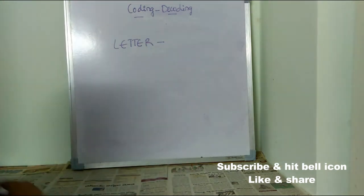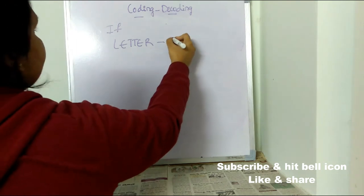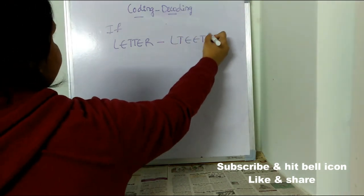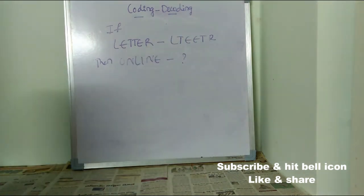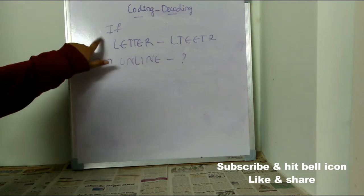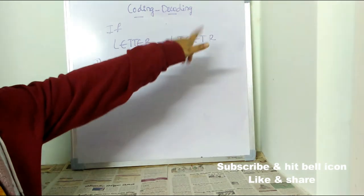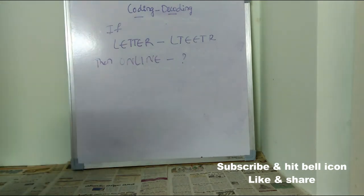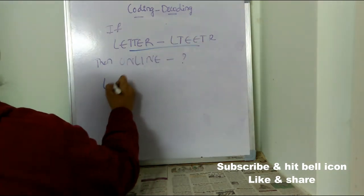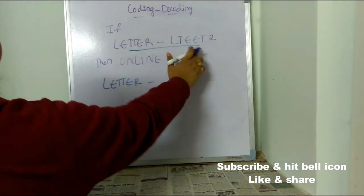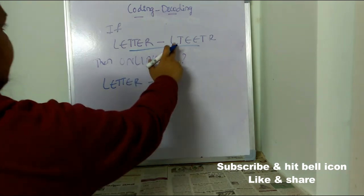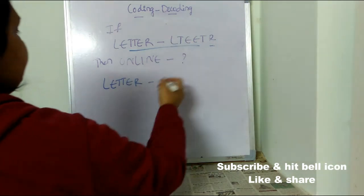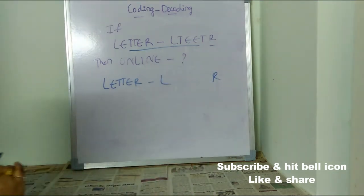The advantage of coding and decoding is that you can maintain confidentiality. Now let's look at a question: if the word LETTER is written as L-T-E-E-T-R, then how would you write the word ONLINE? First, we need to think logically. We need to observe the coded word and try to decode it. Notice that the first and last letters, L and R, remain in the same position — they did not change.